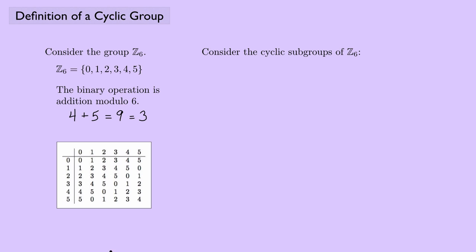I want to look at all the cyclic subgroups of Z6. Let's start by looking at the subgroup generated by the element 1. I would start with 1, then add 1 to get 2, then 3, then 4, then 5. 5 plus 1 is 6, but 6 mod 6 is 0, and then 0 plus 1 is 1, and we're back to where we started. So this is the group generated by 1.